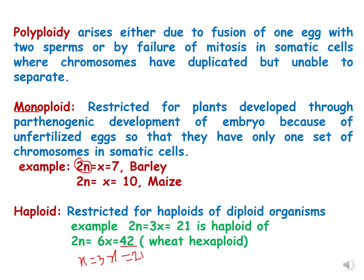What is polyploidy? Polyploidy arises either due to fusion of one egg with two sperms or by failure of mitosis in somatic cells where chromosomes have duplicated but are unable to separate. Polyploidy can be induced with a chemical or it happens naturally also.